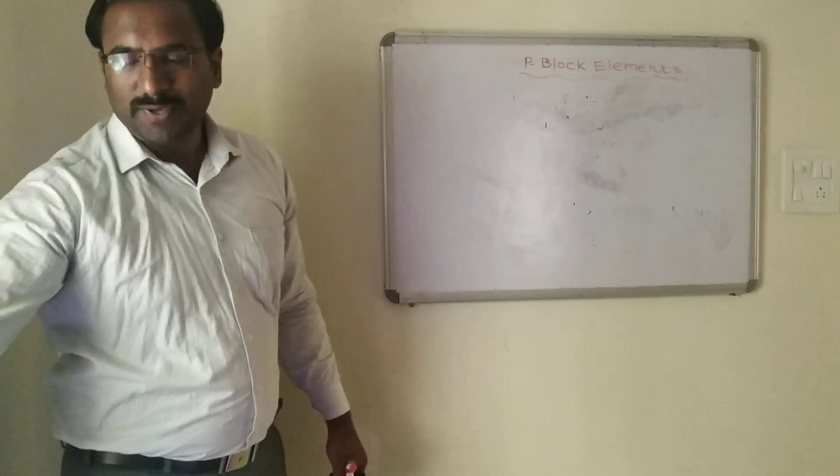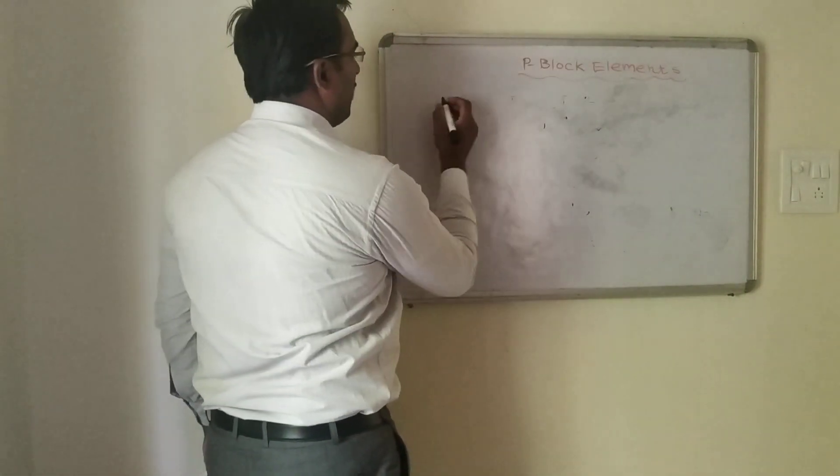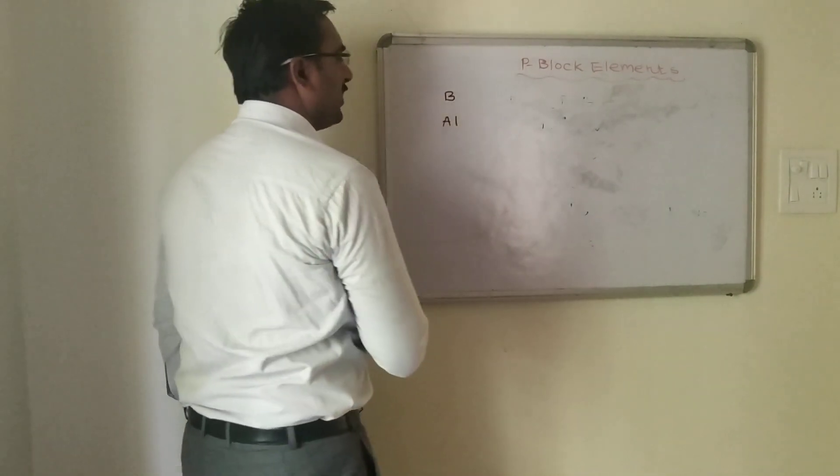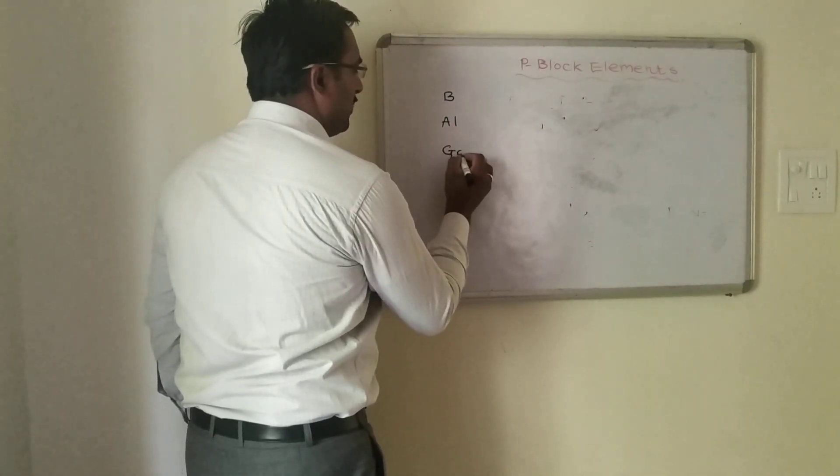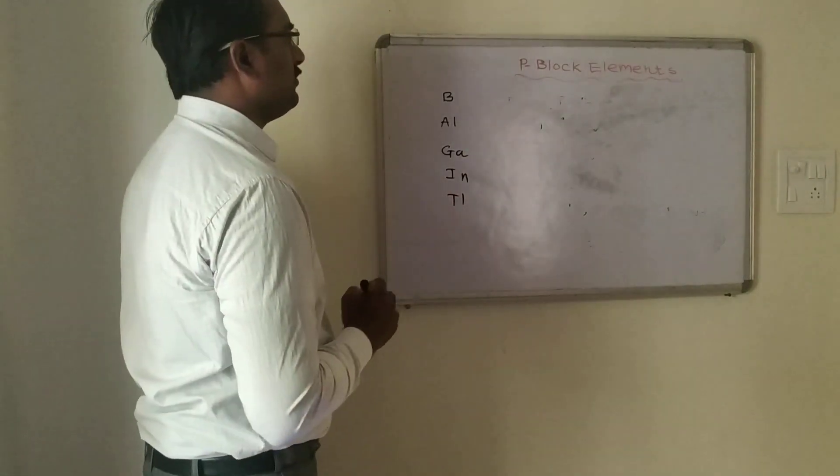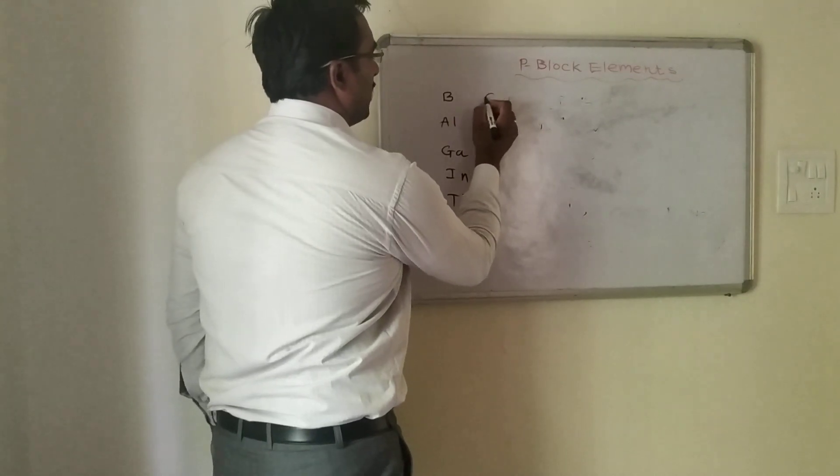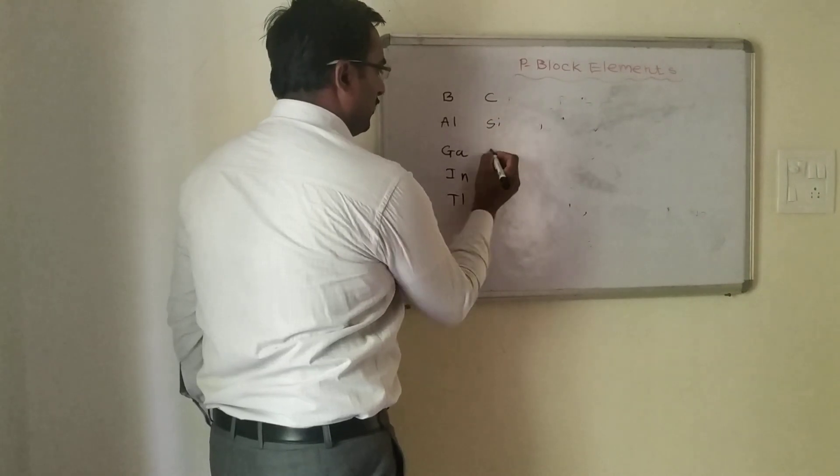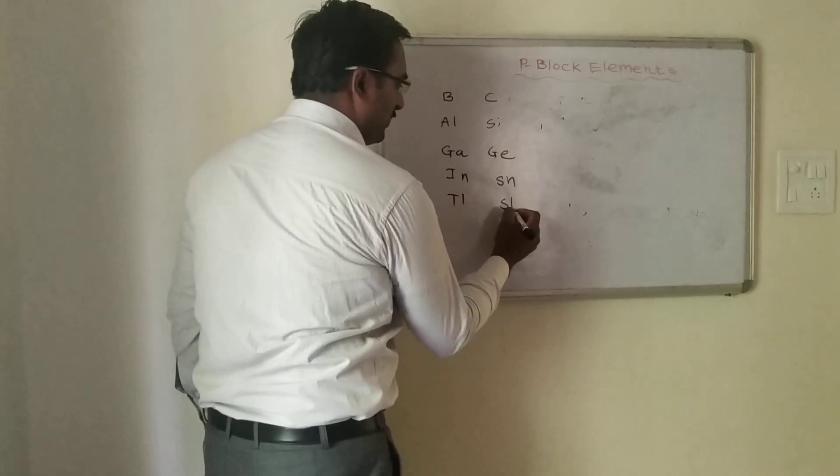Let us have the picture of this p-block element. The representative member of the family: group 13 contains boron, aluminum, gallium, indium, and thallium. Then group 14 is the carbon family: carbon, silicon, germanium, tin, and lead.